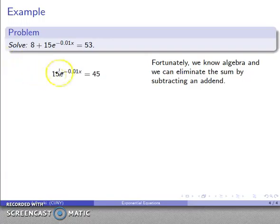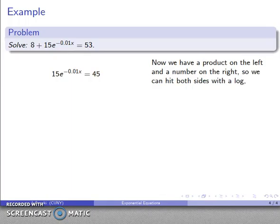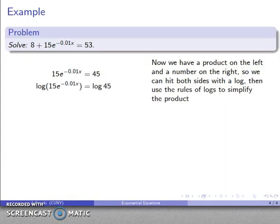I can eliminate an addend—53 minus 8 is 45. Now I have on the left hand side 15 times e to power negative 0.01x. This is now a product, and that means I could use the rules of logs to simplify. I'll hit both sides with the log and use the rules of logs to simplify the product.